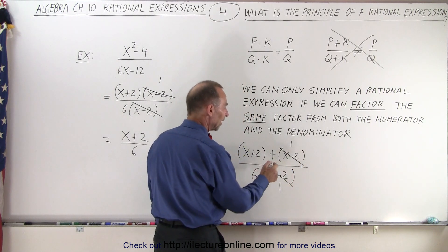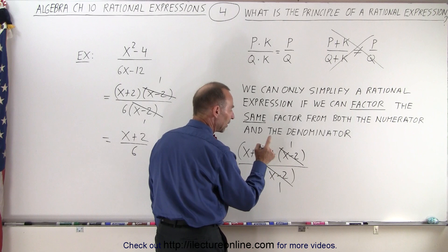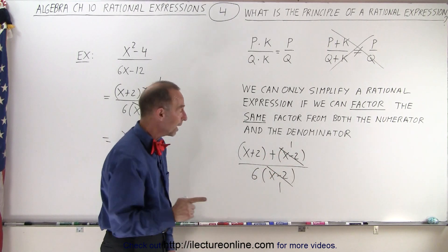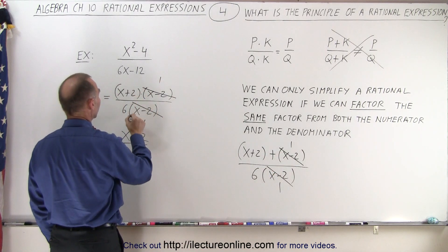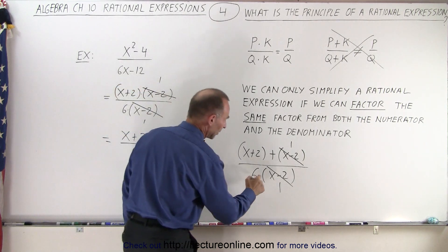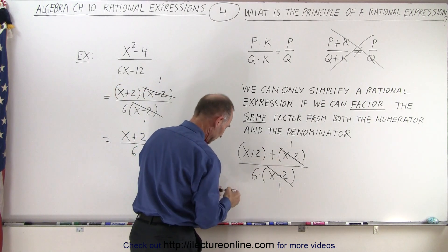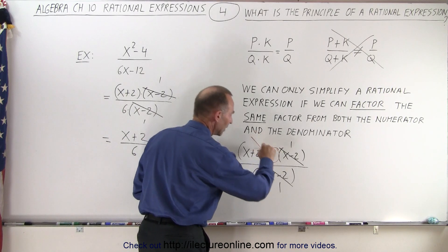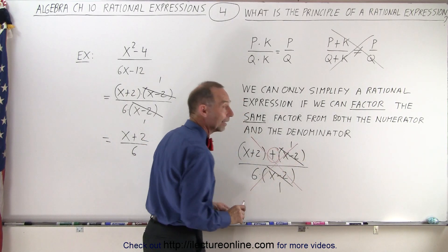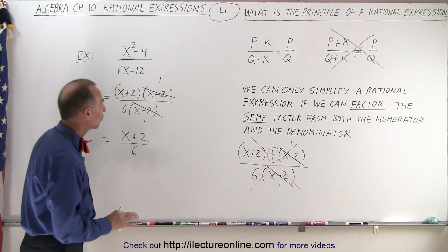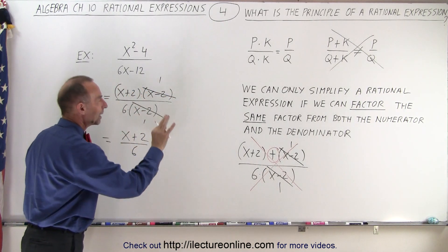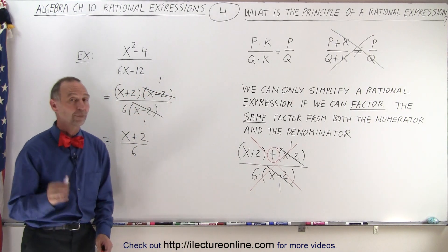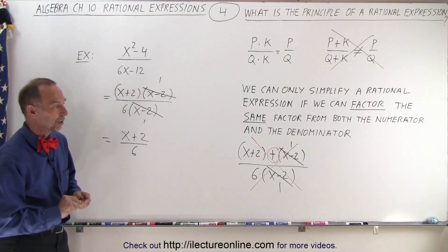The problem is we have a plus sign there, and because of that you cannot do that. You can do it here because we have this multiplied and this is multiplied, but here this is multiplied while this is added. Because of this plus sign, you cannot simplify like that. That is the big difference between what we can and cannot do, and that is the principle of rational expressions.